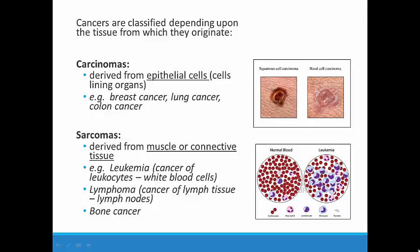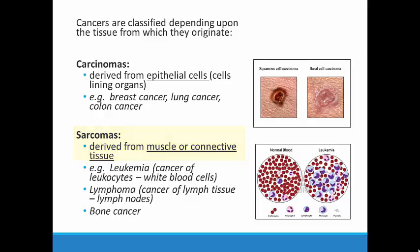Cancers are classified according to the cells that they come from. For example, you may have heard the term carcinoma, which is a cancer of the epithelial cells, or sarcoma, which is a cancer of the muscle or connective tissue. Examples of carcinomas are breast cancer, skin cancer, lung cancer, or colon cancer, while sarcomas might include leukemia, which is cancer of the blood, lymphoma, or bone cancer. You will learn more about some of these diseases as we make our way through the course.